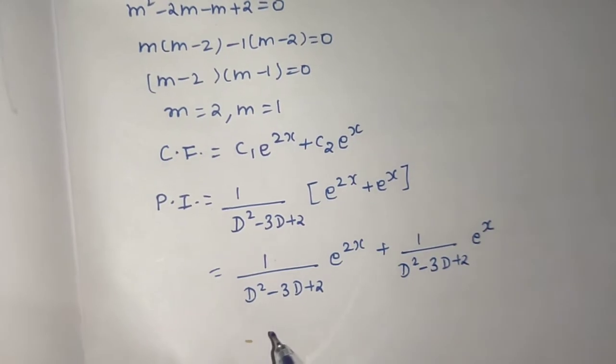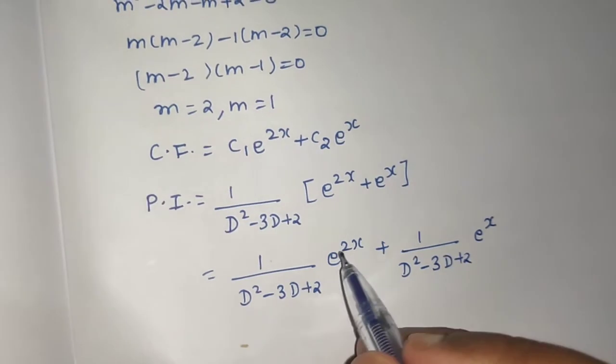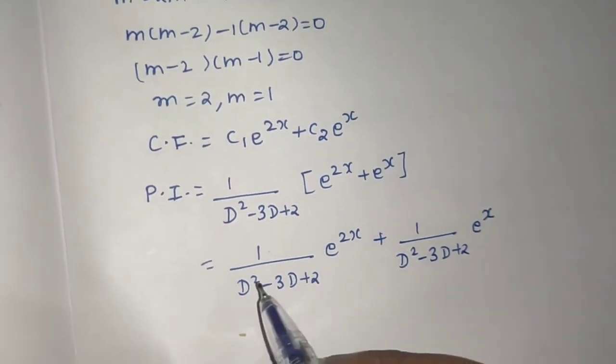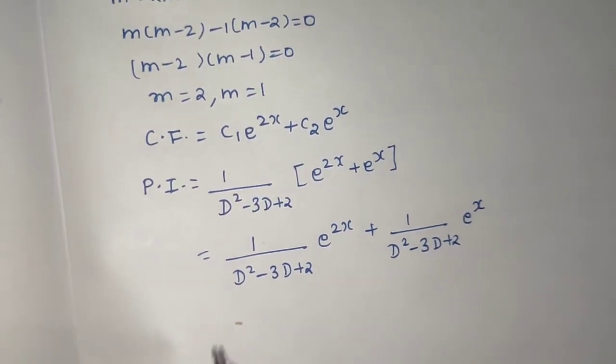Once you put 2 here, because we know the rule for e^(ax) says that put a in place of D. So if you put 2 here, so 4 plus 2, 6 minus 6, you will get 0.